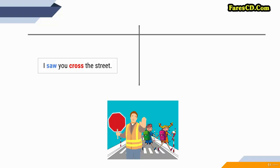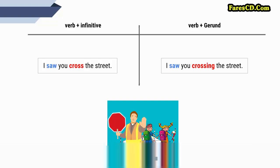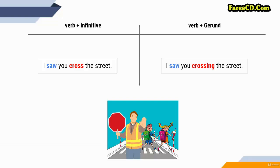It's easy. I saw you cross the street. I saw you crossing the street. In the first example, I saw you cross the street — you see it was infinitive. In the second example, you see verb plus gerund: I saw you crossing.